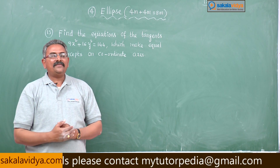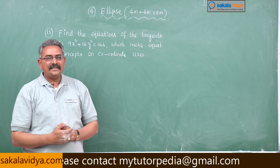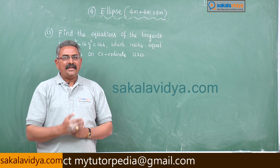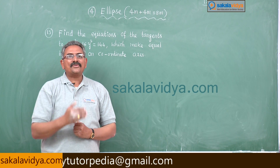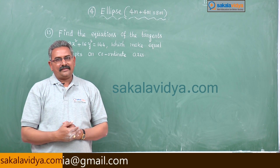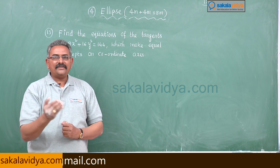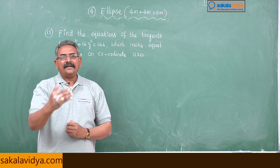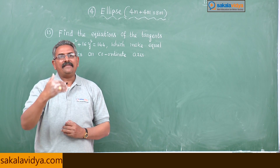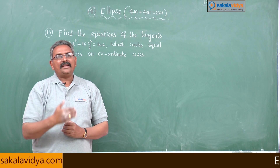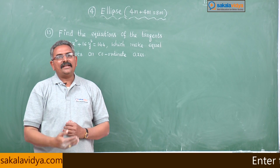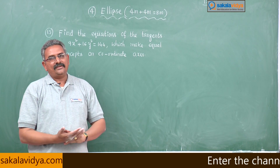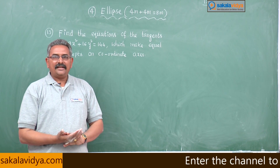We know the condition for tangency is c² = a²m² + b². With the help of that condition, we get the different k values. For different k values, we get equations of the tangents.